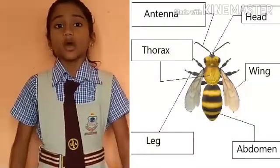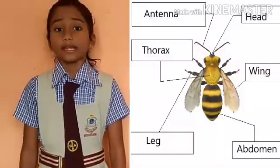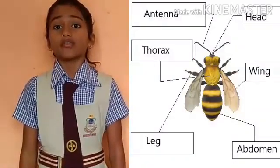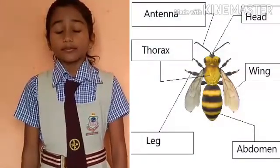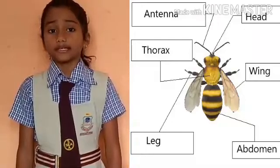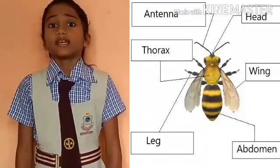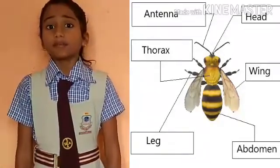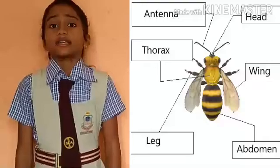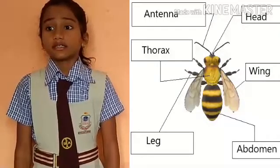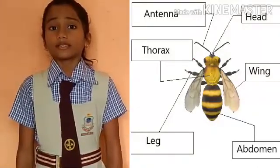Next is thorax. Thorax is the middle part of an insect's body. It contains three pairs of legs and wings.